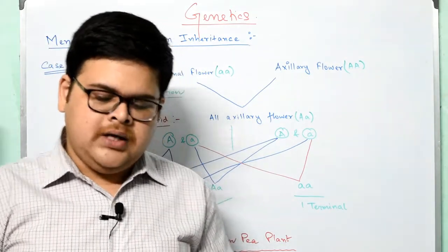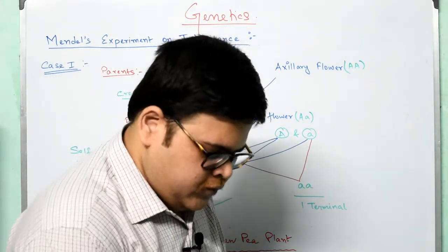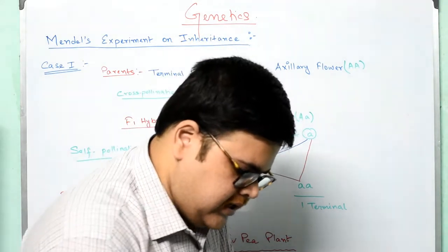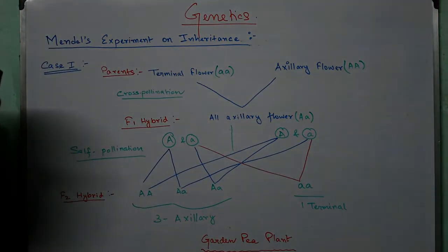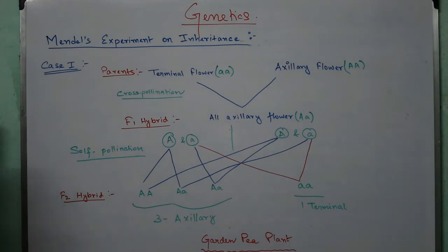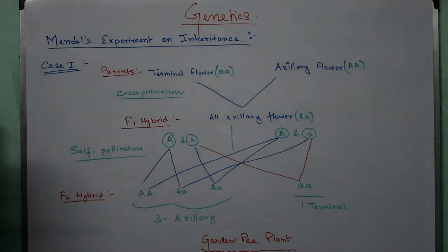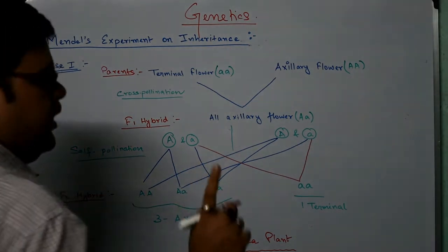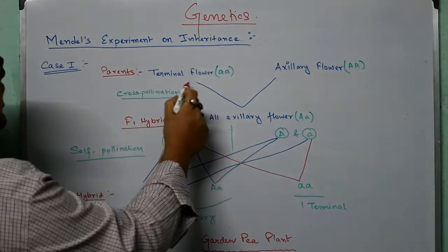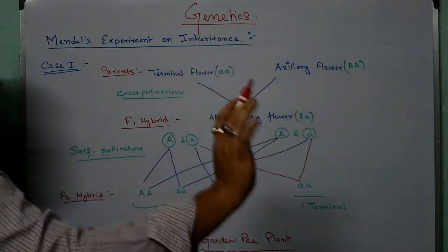For case 1, you can follow your book or look at what I am teaching — it is very easy, you just need to understand. What Mendel did: he took two plants — one plant having terminal flowers and another plant having axillary flowers.